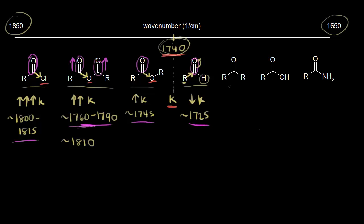Comparing an aldehyde to a ketone: a ketone has two alkyl groups, so there is even more electron donation, weakening the carbonyl even more. K decreases even further, so the signal for the ketone is at an even lower wave number — approximately 1715 or 1720.